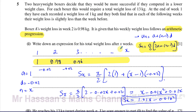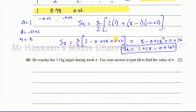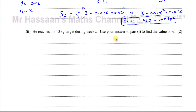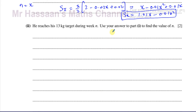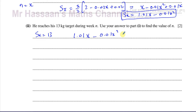Now it says he reaches his 13 kilogram target during week N — use your answer to find the value of N. We want to find when the sum equals 13, so we set 1.01X minus 0.01X squared equal to 13. Multiplying everything by 100 gives 101X minus X squared equals 1300, which rearranges to X squared minus 101X plus 1300 equals 0.